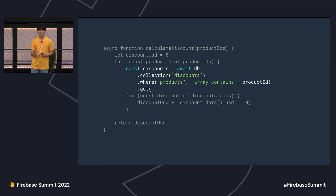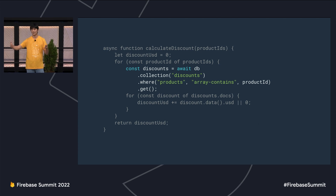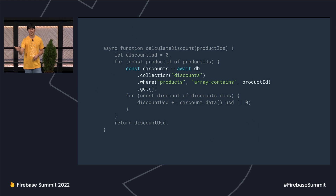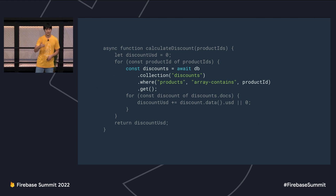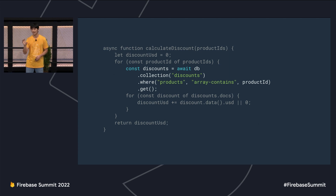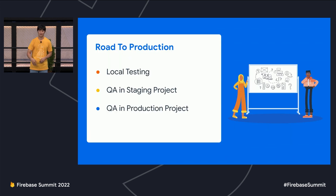The important and interesting piece is the discount calculation. Imagine having a collection of discounts where each discount describes the discounted amount and the products it applies to. For each product she has, she's going to look up the discounts collection, find the discounts that match that product, add it all up, and repeat that for all the products she has.